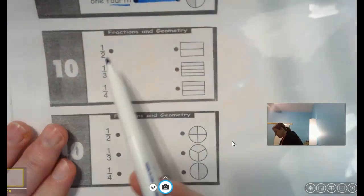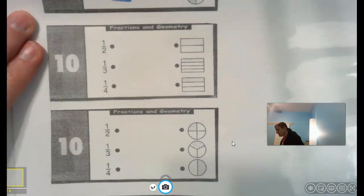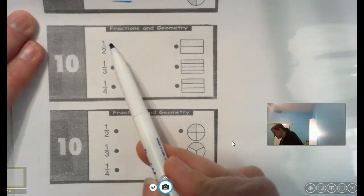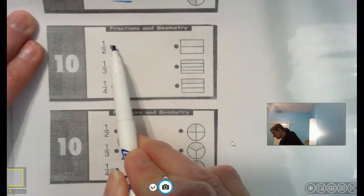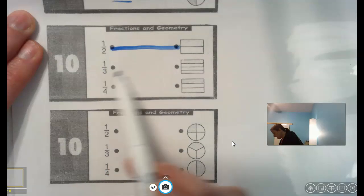Again, they're showing you not the words this time, but the fraction. If you need to look back at your math binder, you can do that. So this is one half right there. It's split into two equal parts. See this bottom number? That's one third.